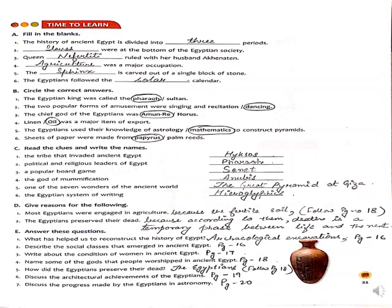The history of ancient Egypt is divided into 3 periods. At the bottom of Egyptian society were slaves. The queen who ruled with her husband Akhenaten was Nefertiti — remember N will be in capital as we are writing the name of a queen. Agriculture was a major occupation. The Sphinx was carved out of a single block of stone. Egyptians followed the solar calendar.